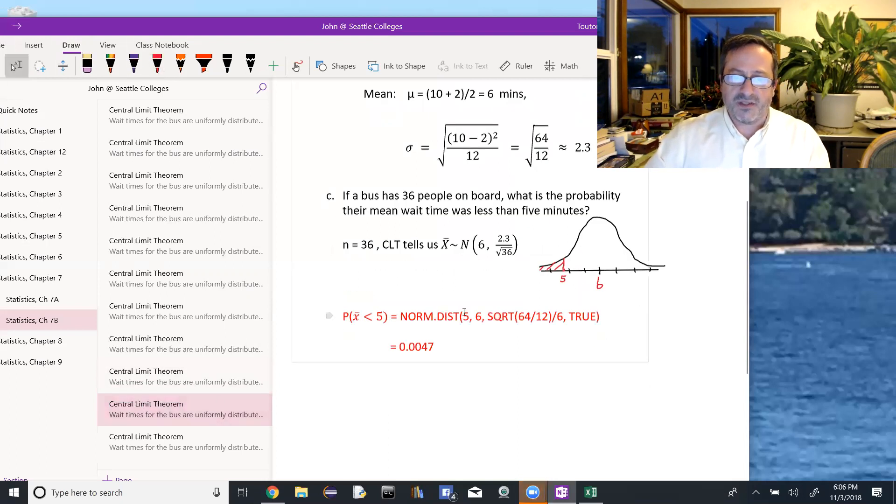Using normal distribution, X is 5, the mean is 6. For the standard deviation, I actually want to type in the exact value. So I'm typing in the square root of 64 over 12. That's the numerator. And I'm dividing it by the square root of 36.